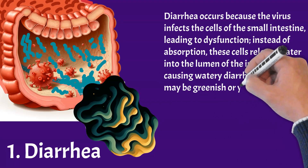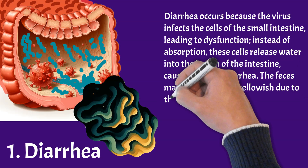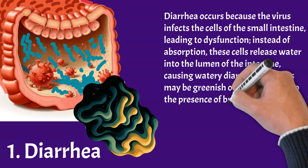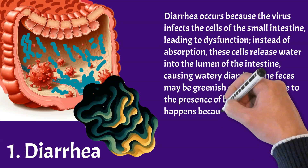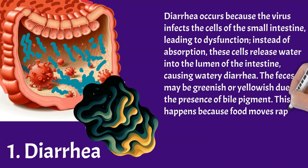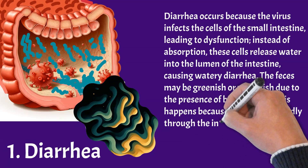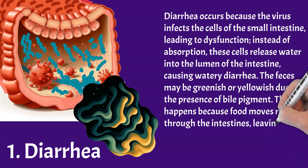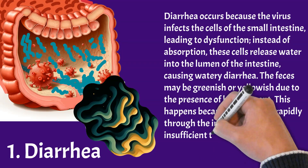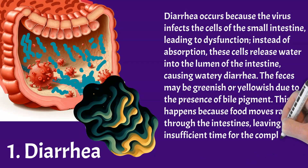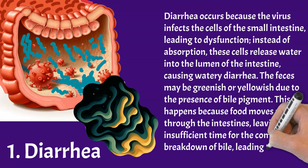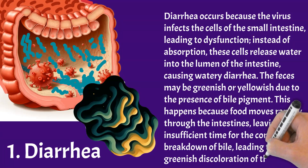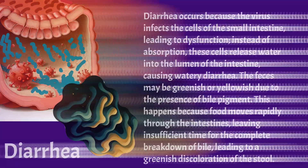The faeces may be greenish or yellowish due to the presence of bile pigment. This happens because food moves rapidly through the intestines, leaving insufficient time for the complete breakdown of bile, leading to a greenish discoloration of the stool.